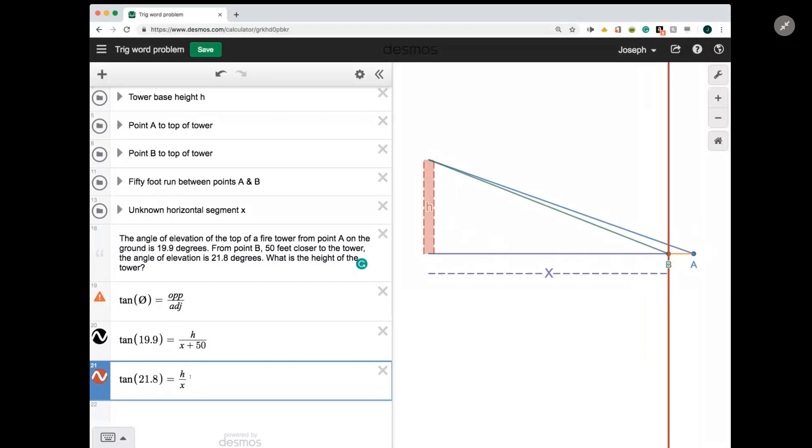First of all, I'm going to try to isolate h and plug, I'm going to isolate h from this slightly simpler equation and plug it into this equation. So if I rearrange this equation, then I could say that h is equal to x times the tangent of 21.8.